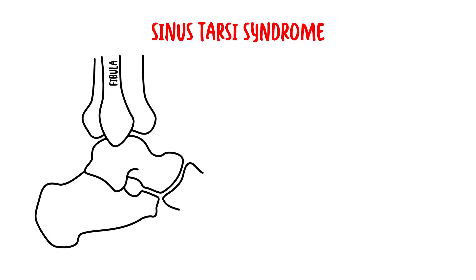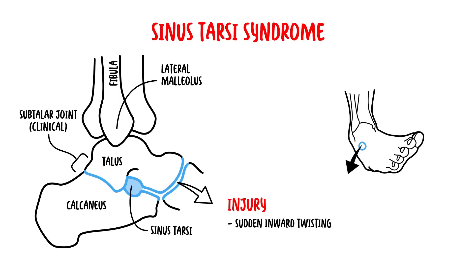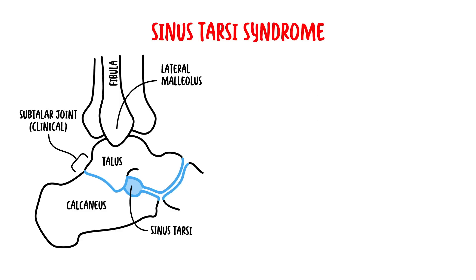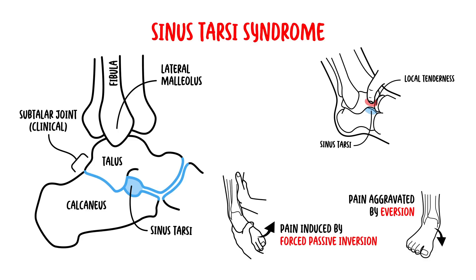Sinus tarsi syndrome involves a small bony passage in the front and below the lateral malleolus that connects the talus and calcaneal bones. This passage is a crucial component of the subtalar joint and houses the subtalar ligaments. It can sustain injury either from a sudden inward twisting of the foot or from ongoing strain caused by excessive pronation of the subtalar joint. Symptoms include pain aggravated by eversion, local tenderness over the sinus tarsi, pain induced by forced passive inversion, and the diagnosis is confirmed by injecting local anaesthetic.